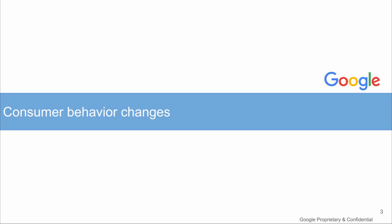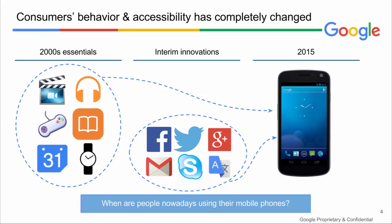Let's start off with the changes in consumer mindset and behavior brought by the rapid mobile and smartphone emergence. The development of the smartphone has provided us with a tool which is much more than just a device. In the beginning of the 20th century we used to have different devices and objects to perform various actions — one for listening to music, one for watching TV, reading news, playing games, checking the time, and so on. Today, all these tasks can be done using only one object: a smartphone.